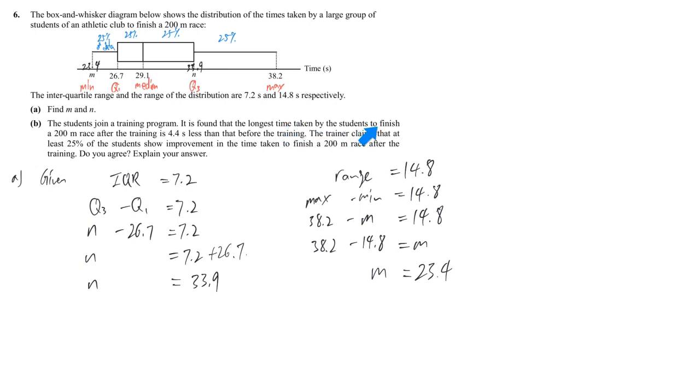The longest time taken by the students to finish 200m race after training is 4.4 seconds less. So we need to know what is the new maximum. Original maximum 38.2, now this is 4.4 less. The original maximum minus 4.4, 33.8 seconds. So which means we find out that the largest value now, the maximum is 33.8.